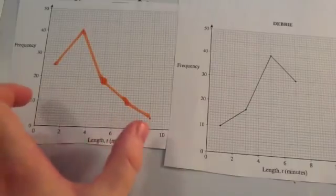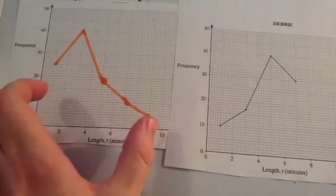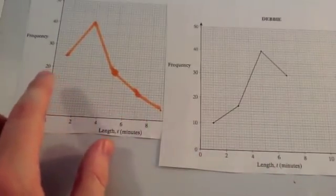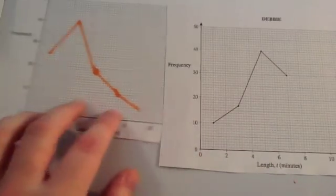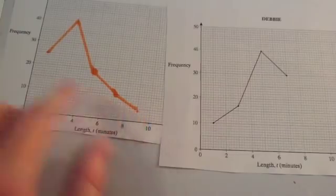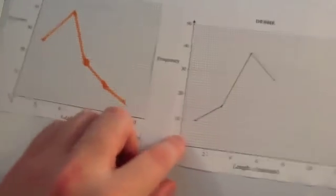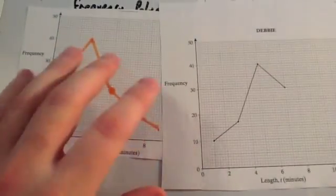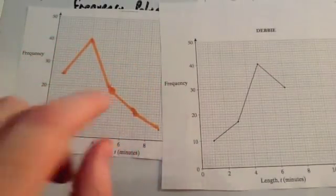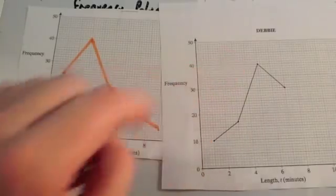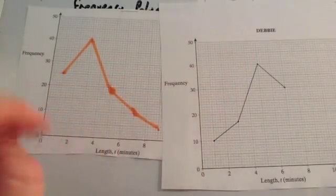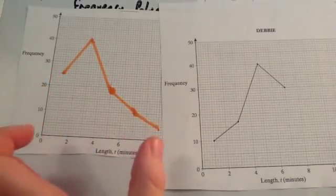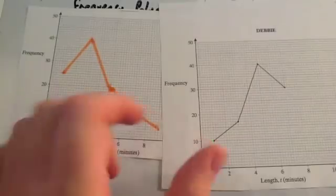The second thing I notice is that the range for Carla is larger than the range for Debbie. Carla's phone calls go from 1 minute to 9, while Debbie's go from 1 to 7. So the two things I notice from these frequency polygons: the mode is higher for Debbie because her peak happens at a later point, and the range is larger for Carla because her telephone calls go on for longer than Debbie's.